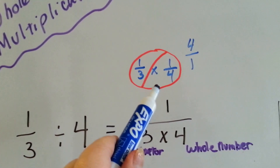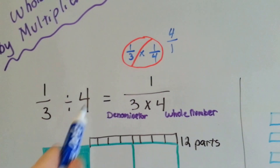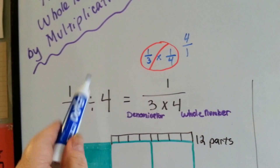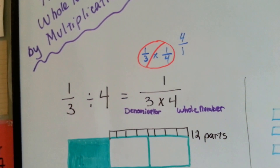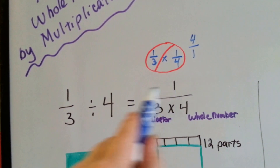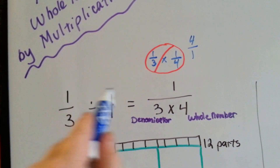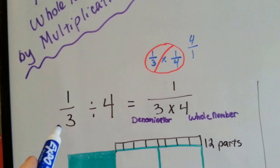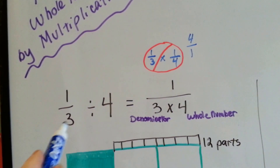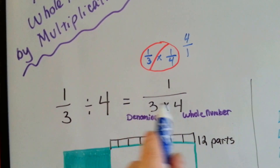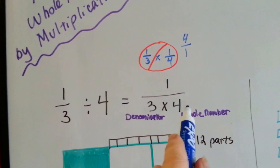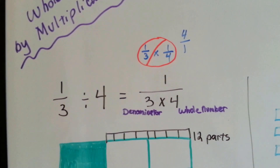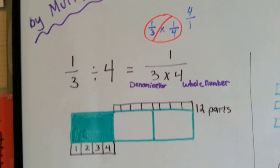But I don't want you to think of it this way. Don't turn it into a reciprocal. If you want your life to be easier, just put the numerator up here and consider this denominator and this whole number as the new denominator. If you think of it my way, you're going to answer your math a lot quicker.